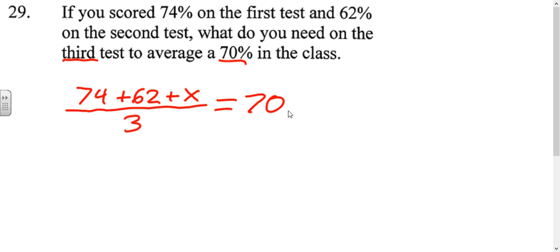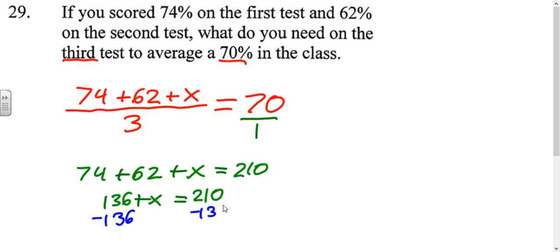So to solve, you just have to multiply by three. It's like cross-multiplying. 74 plus 62 plus x equals 210. 74 plus 62 is 136. So to solve for x, we're going to subtract 136. And we end up with x equals 74.